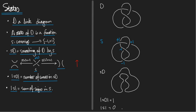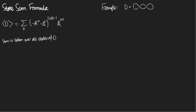That's all the terms we need. Here is the state sum formula: the Kauffman bracket of a diagram D is the sum over all states of that diagram of the quantity (-A^{-2} - A^2)^{|sD| - 1} times A^{|s|}. That's the state sum formula — it's a big theorem in the notes, theorem 7.7. It takes some proving, but let's illustrate with an example.